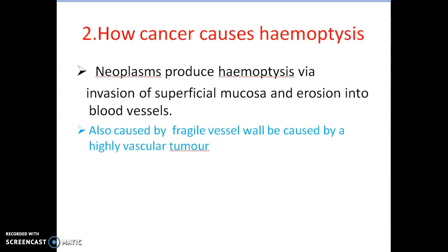Now I talk about how cancer causes Haemoptysis. Neoplasms produce Haemoptysis via invasion of superficial mucosa and erosion into pulmonary vessels, and also caused by fragile vessels produced by a highly vascular tumor.